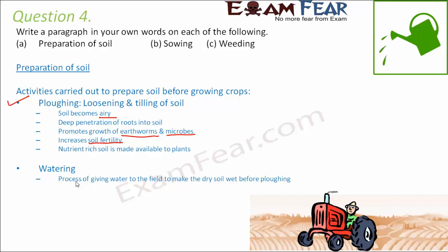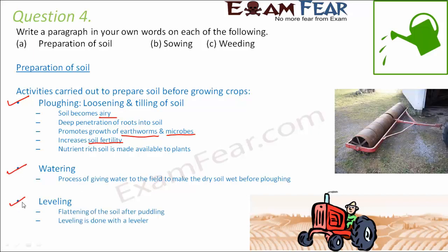The second activity is watering — giving water before plowing when the soil is very dry, since plowing on very dry soil is difficult. The third activity is leveling, where the rough surface is flattened by breaking bigger soil pieces into smaller ones. This is done with a leveler, which has a flat surface that rolls and flattens the soil. These three activities together prepare the soil for crop cultivation.